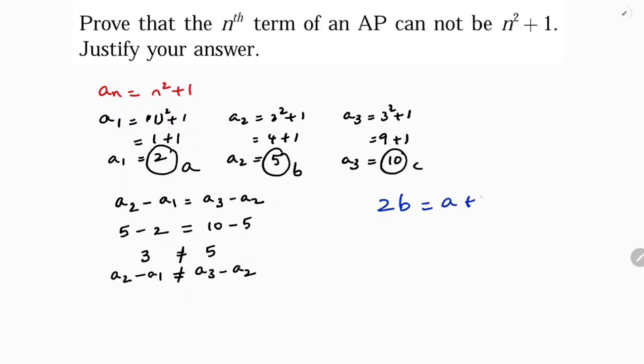So 2 times 5 is 10, and a plus c is 2 plus 10 which is 12. So here also, 2b is not equal to a plus c.